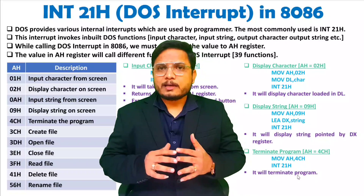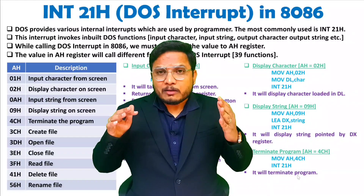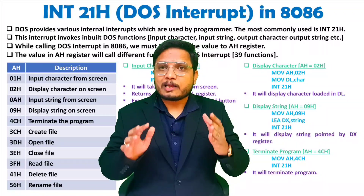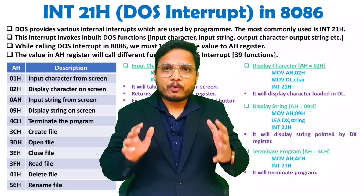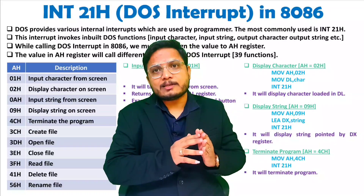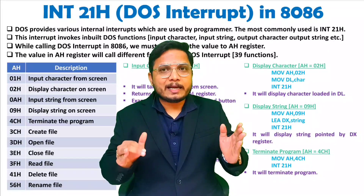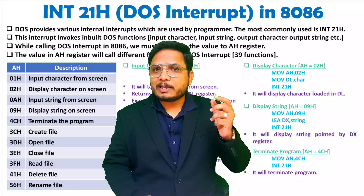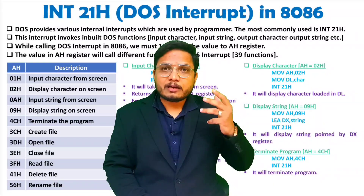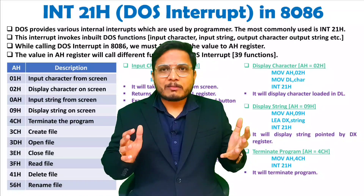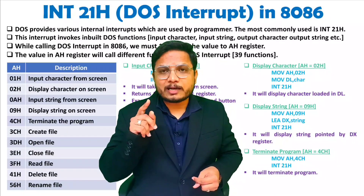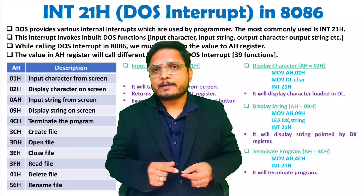There are 39 functions available with DOS for 8086. For each one, load the appropriate function code into the AH register, then execute INT 21h to invoke the desired DOS interrupt function. If you have any confusion, post it in the comment box so we can have a discussion. Thank you for watching this video.